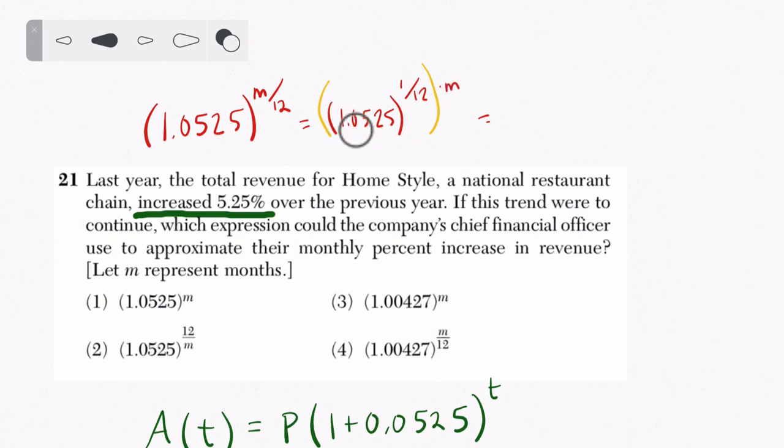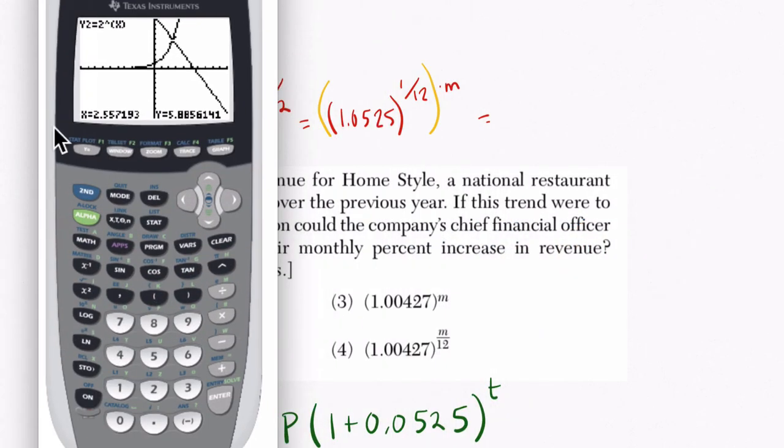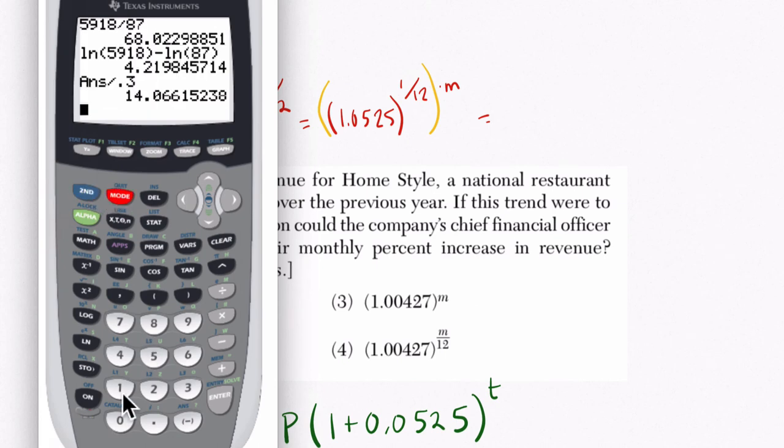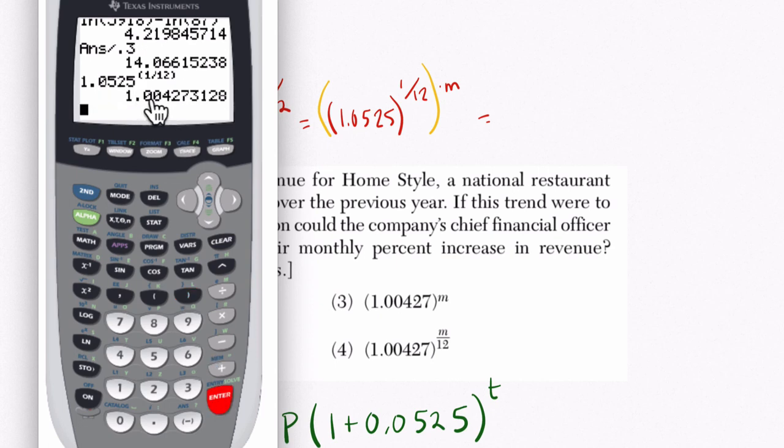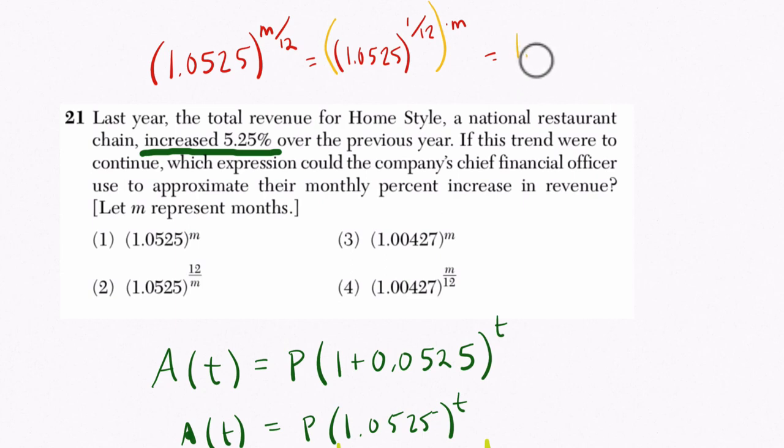So on my calculator I can do that. I can enter 1.0525 to the power of, I'll write as a fraction, 1 divided by 12, that's the 12th root. Hit enter, and we get 1.00427. So that's 1.00427 to the m power.